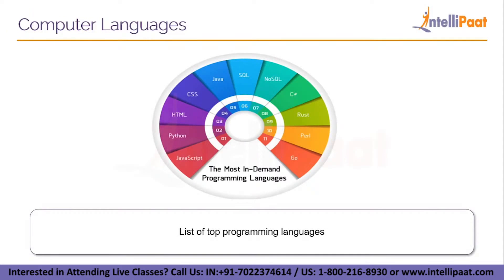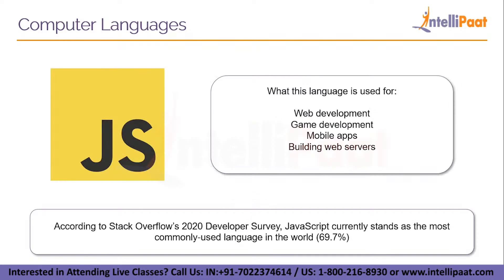This is the list of the top programming languages as of 2021. Leading the way is JavaScript, then followed by Python, HTML, CSS, Java, SQL, NoSQL, C Sharp, Rust, Perl, and last but not the least, Go. Now we'll take a look at some of these languages in brief.